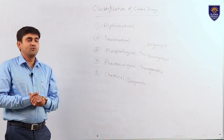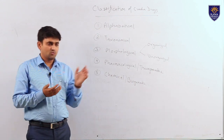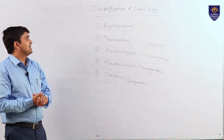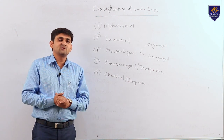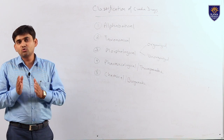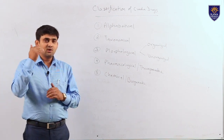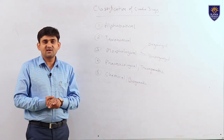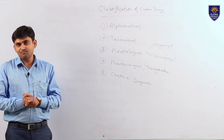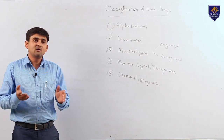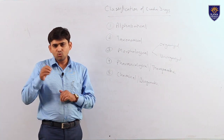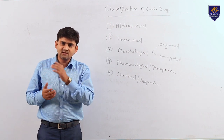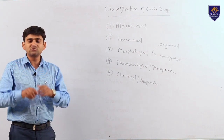The next topic is classification of crude drugs. We can classify crude drugs by various methods to study their characters. First is alphabetical classification, where we organize drugs according to the alphabet of their names. Second is taxonomical classification. It is the most accurate classification, based on the evolutionary characters of a drug from kingdom to species: kingdom, sub-kingdom, order, sub-order, class, sub-class, family, genus, and species. It is the most accurate and most scientific classification.